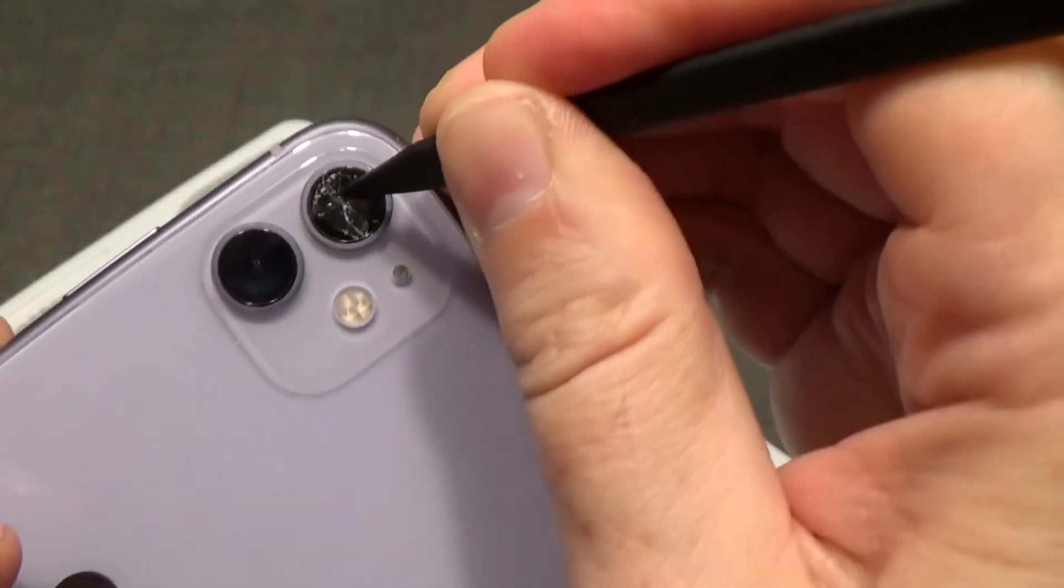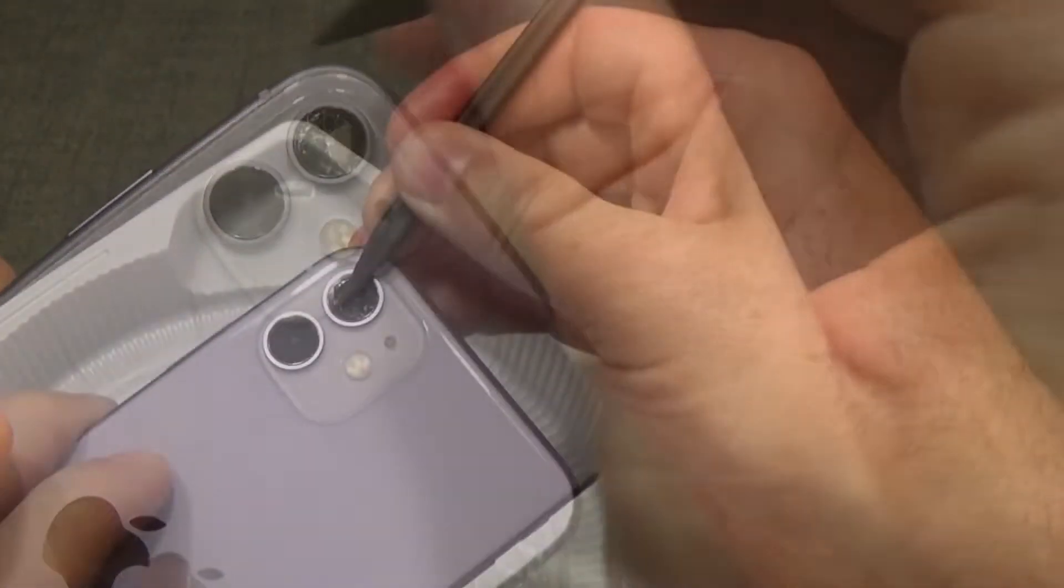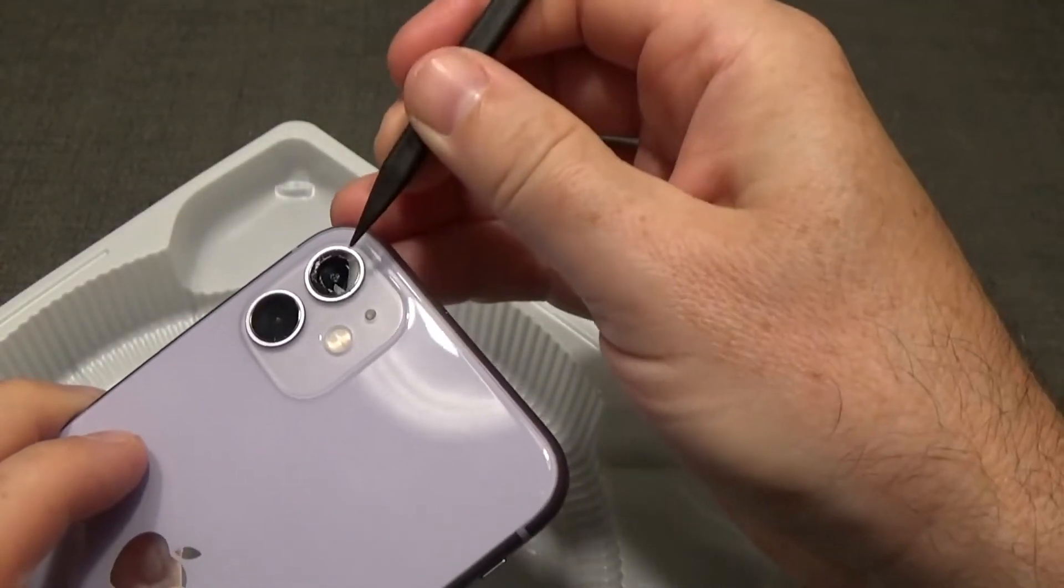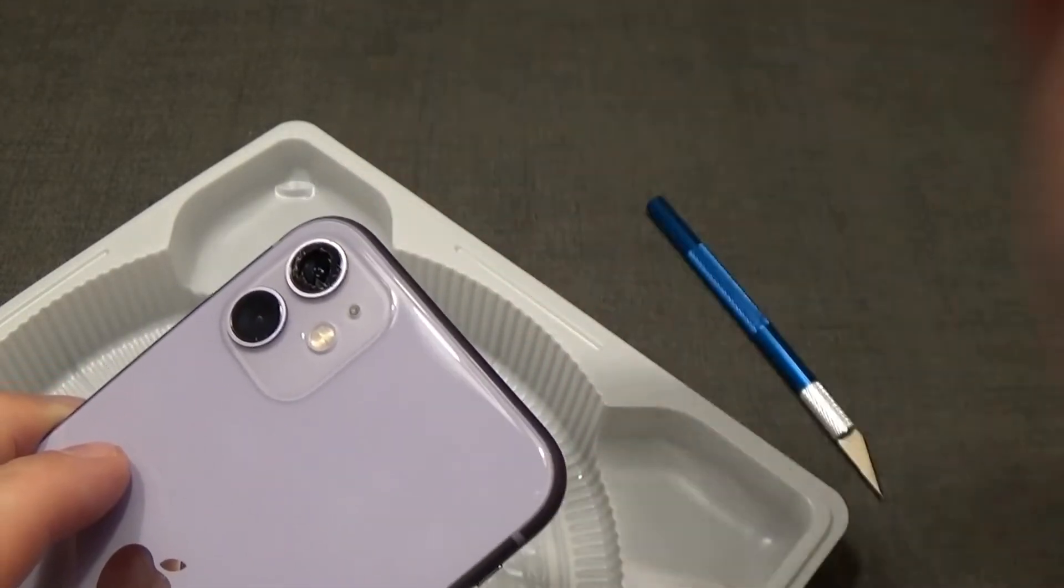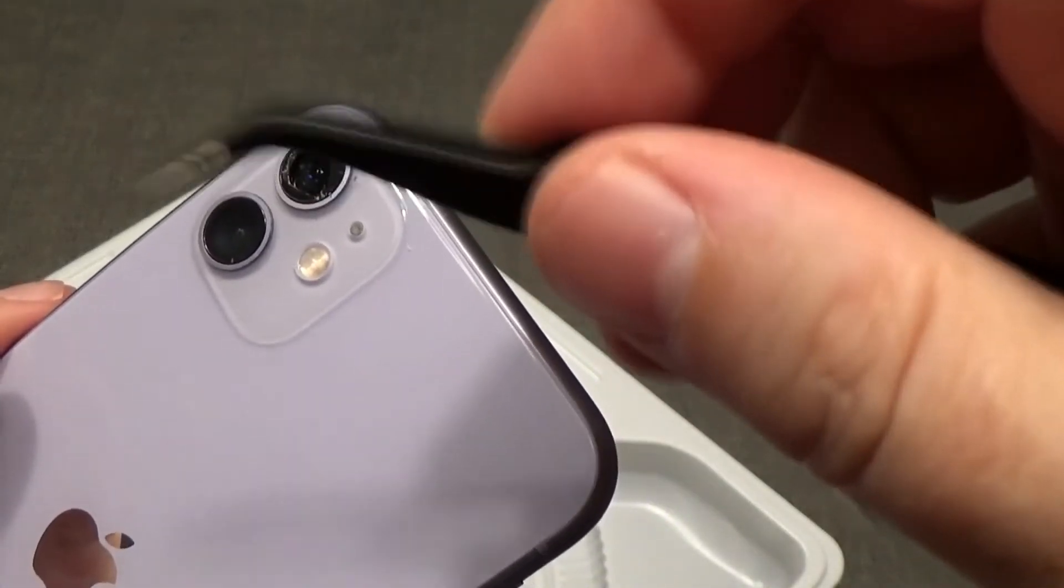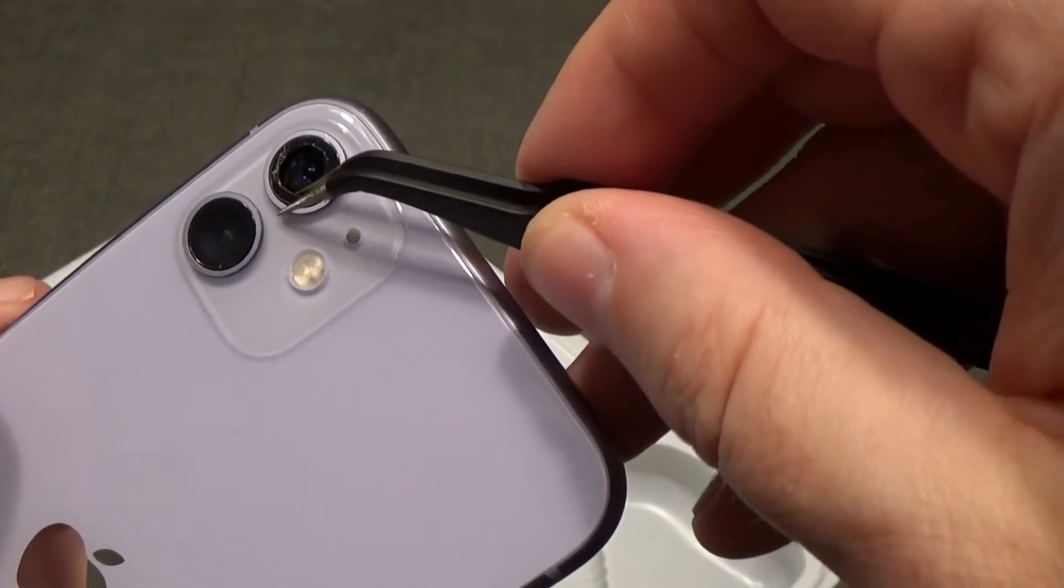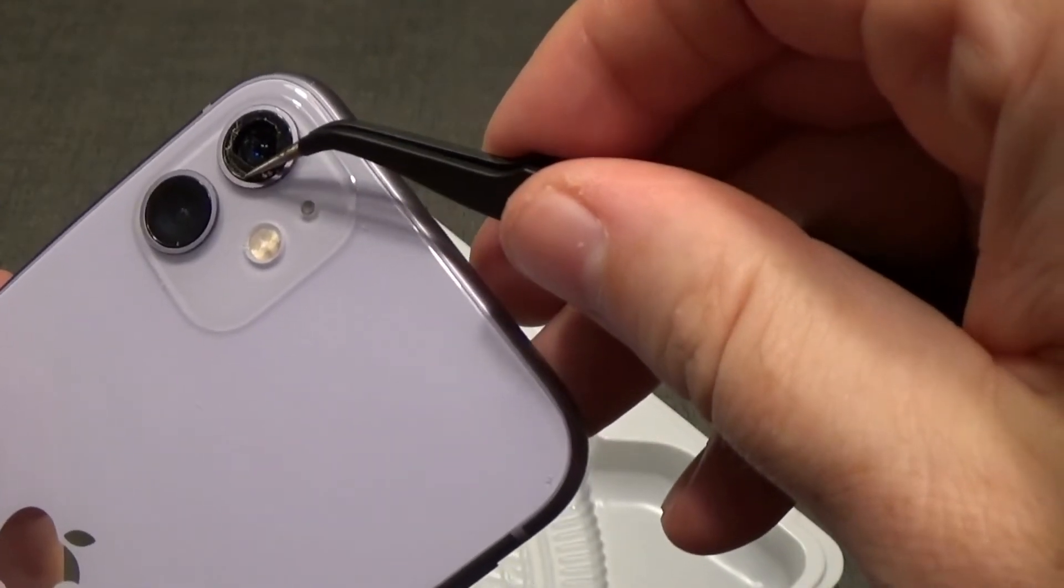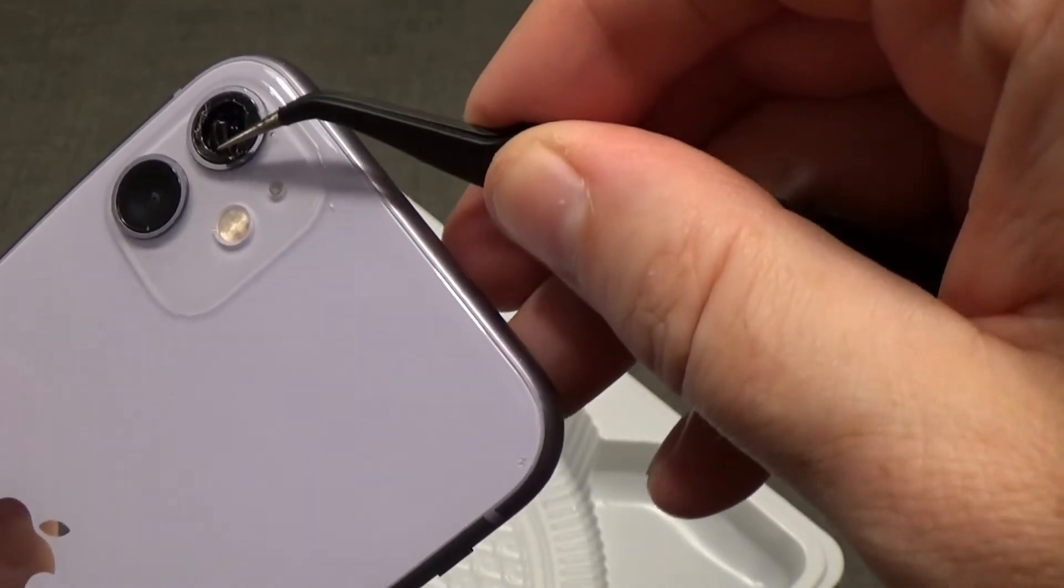I'll start using the exacto knife and those little pair of tweezers. So I found that actually this is the best tool for getting those larger pieces of glass off around the edge. The exacto knife doesn't do it as well.